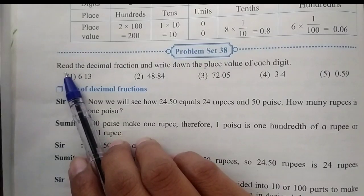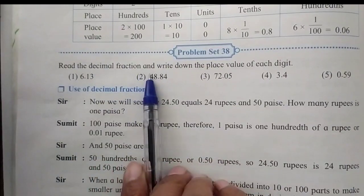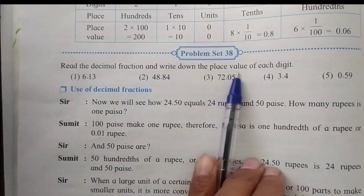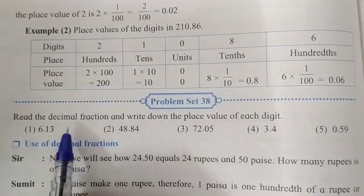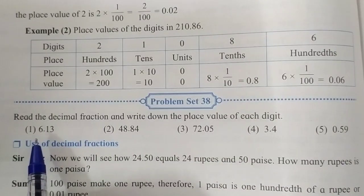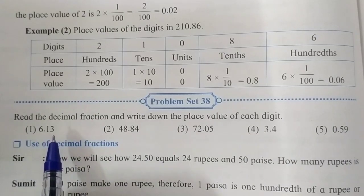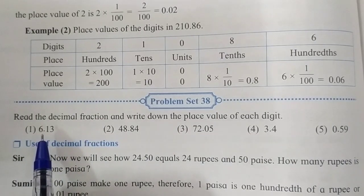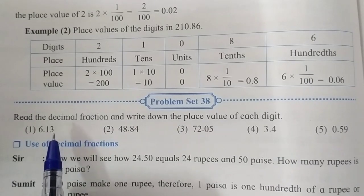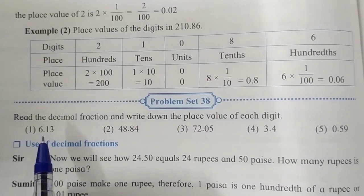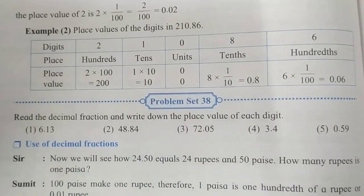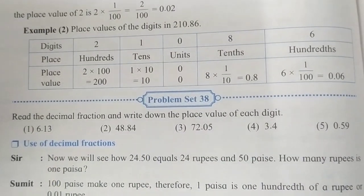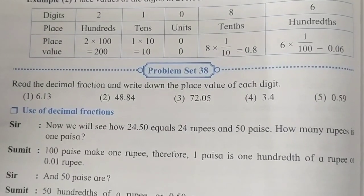The question is: read the decimal fraction and write down the place value of each digit. Our first decimal fraction is 6.13. This is the reading of this decimal fraction, 6.13. Now we are going to write the place value of each digit in this fraction. Let's write it in our notebook.